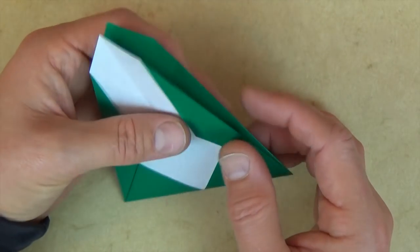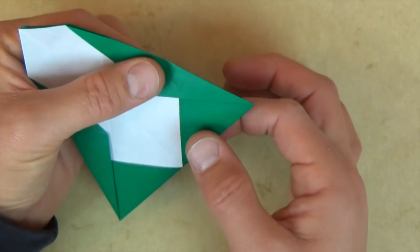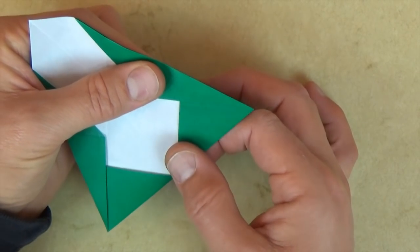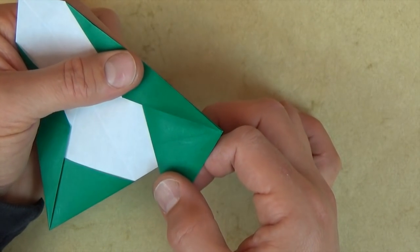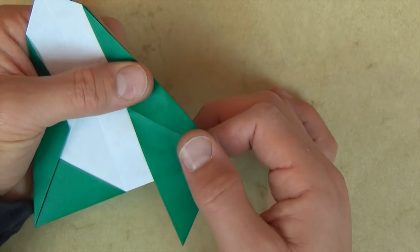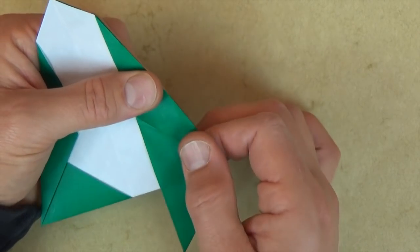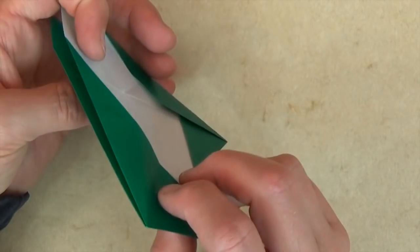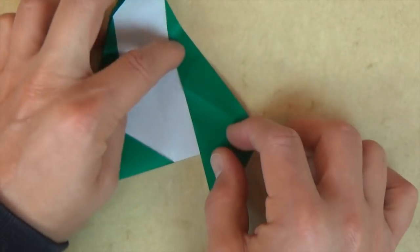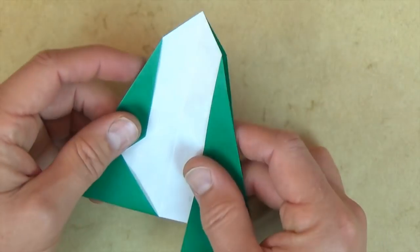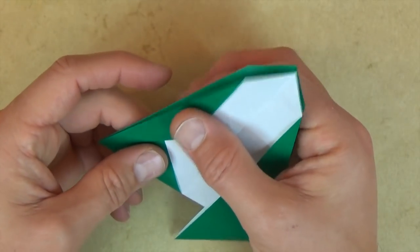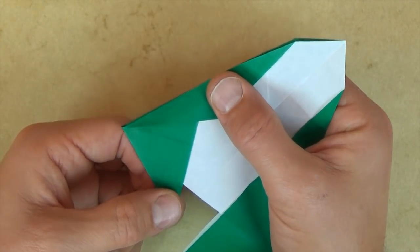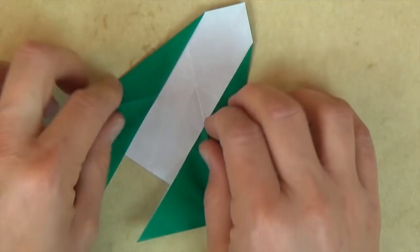Okay, now holding like this we're going to slide this corner out. So just grab onto it and let the layers slide out and down just like that. So that's what it should look like. And let's repeat on this side. Hold right here and slide this corner out and flatten.